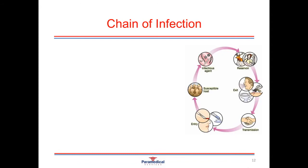Infections and diseases can only spread when the conditions are right — we call this the chain of infection. There are six links, all of which need to be intact for infection to spread. The first is the pathogenic agent — bacteria, virus, fungi, or parasite — which must be present. The second is the reservoir: the source where the infectious agent can normally live and multiply, such as a human, animal, insect, soil, or contaminated food or water source.